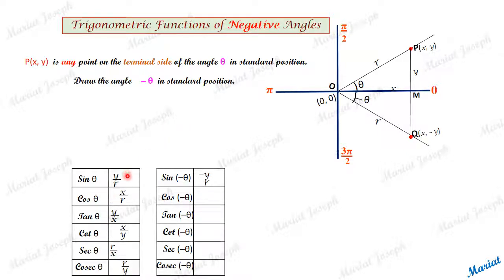So according to the definition, y coordinate upon r. Y coordinate is minus y upon r. Minus y upon r will be the sine of minus theta. Cos minus theta is x by r. Tan minus theta is minus y by x, cot is x by minus y, sec is r by x, and cosec is r by minus y. Simple respective definitions using the new coordinates.